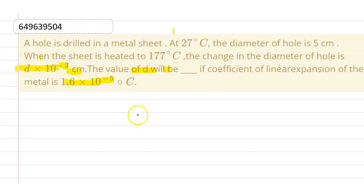What do we give to you? At 27 degrees Celsius, the diameter of the hole is 5 cm. And at 177 degrees Celsius, let us say, the diameter of the hole is capital D cm. Now, the change in the hole is d minus 5. And let us give this value, d into 10 raised to power minus 3 cm.